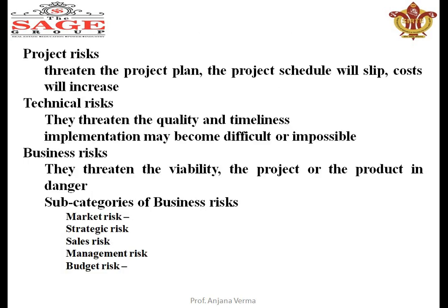After that, project risk threatens the project plan — schedule and cost will increase. That is the project risk. Technical risk means quality and timeliness become impossible and difficulties are coming in technicality. Business risk comes in many ways. When our product is going to be delivered, which type of risk will come? Market risk — when we planned, the market was not that high, but now it is. Strategy risk, sale risk, management risk, and budget risk. Our product may be expensive and a cheaper competing product may come, so our product is not selling. These are the business risks.